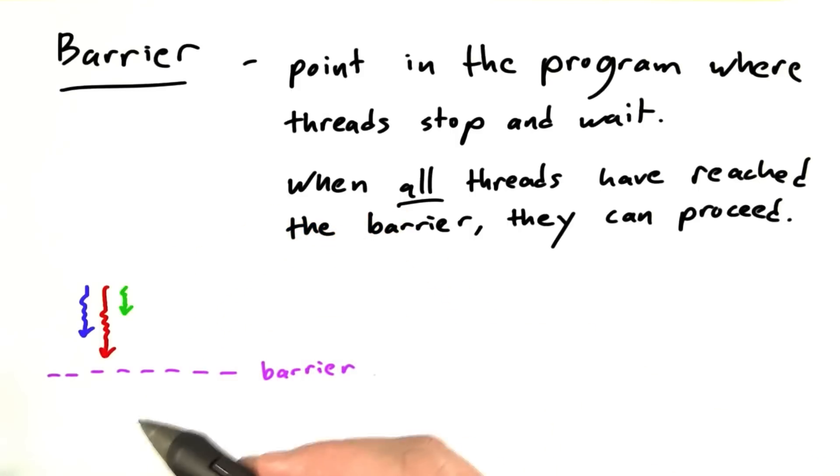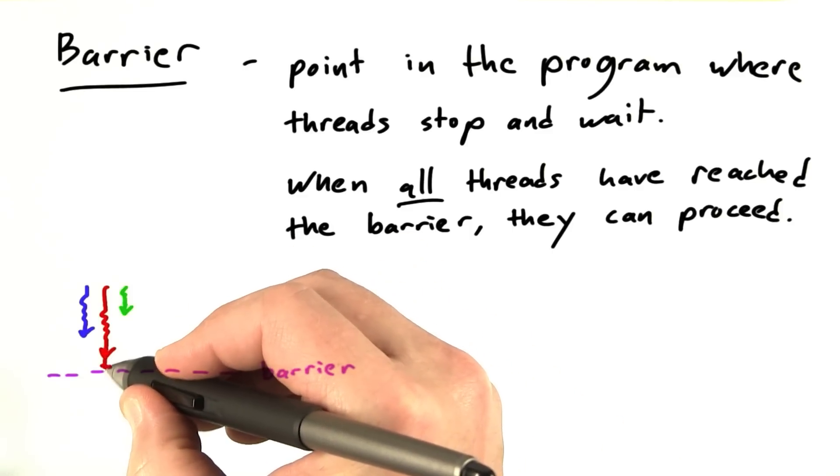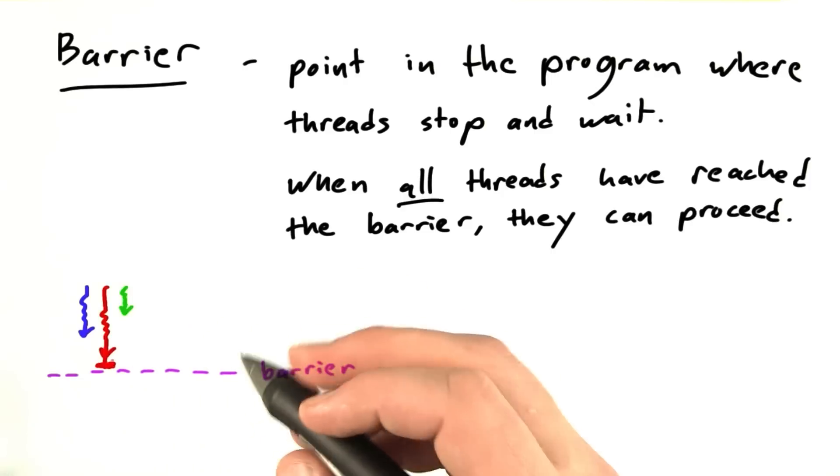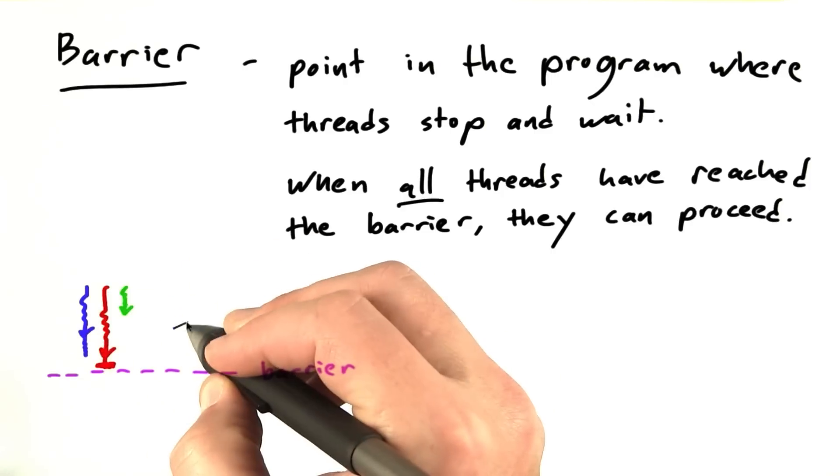The idea is that when they reach the barrier, they're going to stop and wait for all the others to catch up. So in my drawing, the red one reaches the barrier first and stops. And in the meantime, the blue one is proceeding along and the green one is proceeding along.